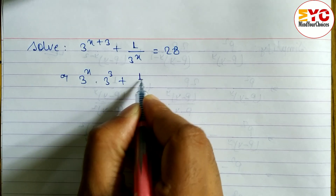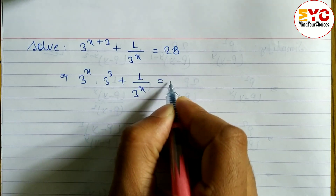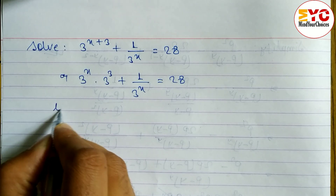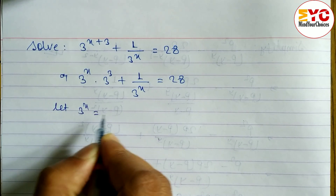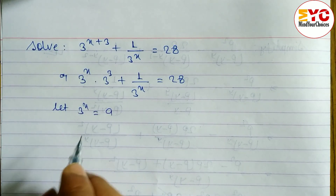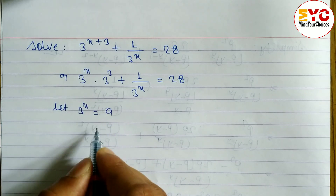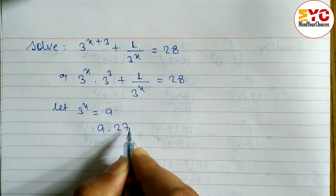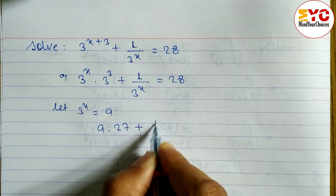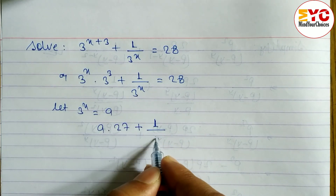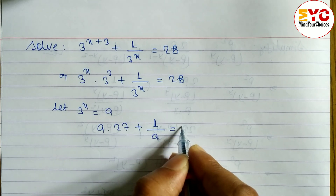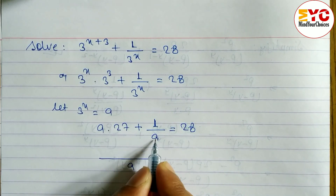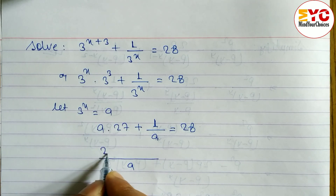So 1 by 3 power x is equal to 28. First of all, we have to let 3 power x equal to a. In the place of 3 power x we write a, and 3 power 3 means 27. So we have: 27a plus 1 by a is equal to 28. After that we take LCM — LCM is a, so a into a gives a squared.